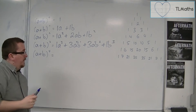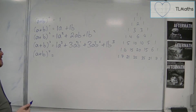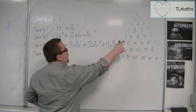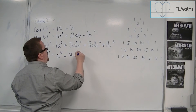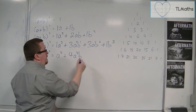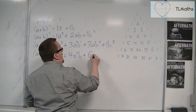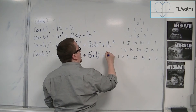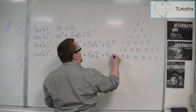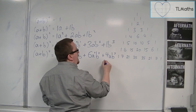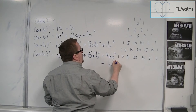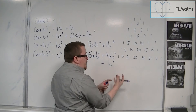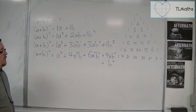So in writing out a plus b to the power of 4, this would be 1 lot of a to the 4, plus 4 — a reduces in power, b increases in power — plus 6 — a reduces, b increases — plus 4 — a reduces, b increases — and then finally b to the power of 4. So a reduces down to 1, and we just have b to the 4 on the end.